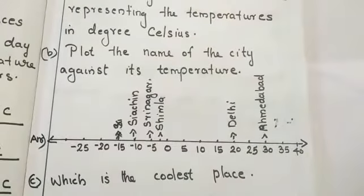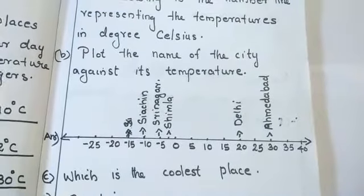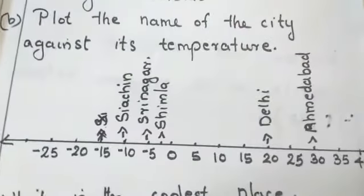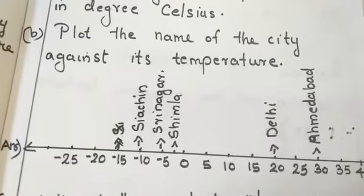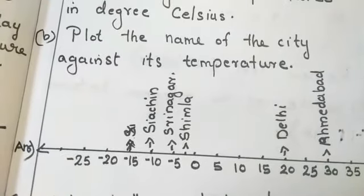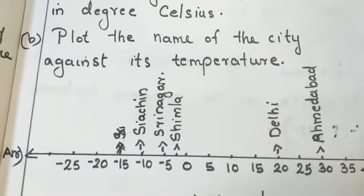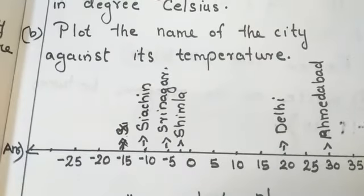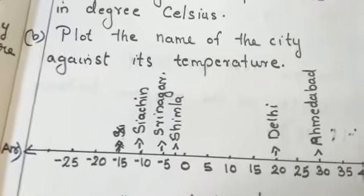Next 2 places having more than 0 degree Celsius or above 0 degree Celsius. So, it is 20 and 30. In this way we can plot the places against the temperature. Understood? Observe the number line. You can see negative numbers are left to 0, positive numbers are right to 0.